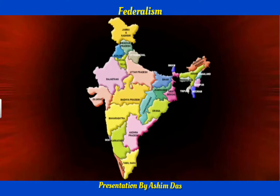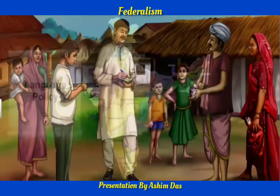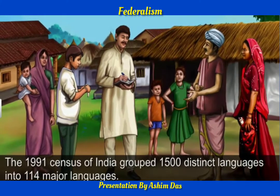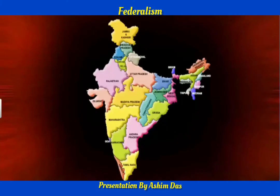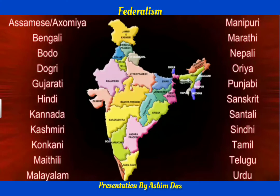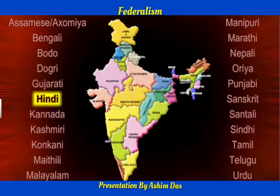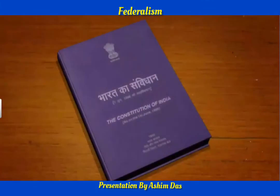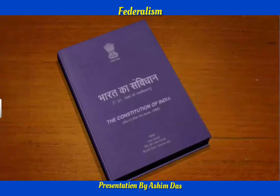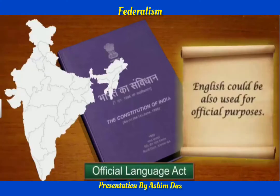Another test for the success of the Indian Federation was the framing of language policy in a multi-linguistic country. The census of India held in 1991 identified 1,500 distinct languages and grouped them under 114 major languages, of which the constitution recognizes 22 scheduled languages. Hindi is the official language, although some states conduct official work in their own local language. The use of English as an official language was to stop in 1965, but this did not happen due to opposition from non-Hindi speaking states. The Official Language Act states that English would remain the official language so long as non-Hindi speaking states desire.